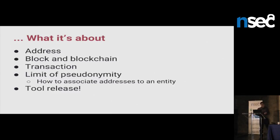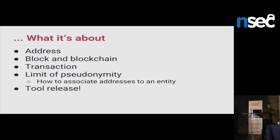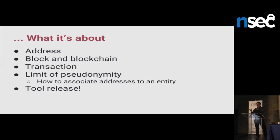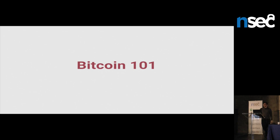So now, what is this talk about? It's about addresses, blocks, blockchain, transactions, and what is the limit of pseudonymity. Because we say that Bitcoin is an anonymous network, but it's not exactly that. During this presentation I'll try to teach you how to associate addresses to a possible entity, and then use external source information to match a real person's identity over a node of the network. Finally, we'll get a tool release, because I'm pretty sure you'll want the tools to try it yourself.